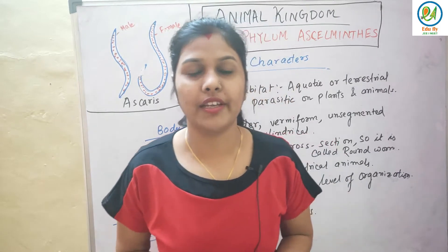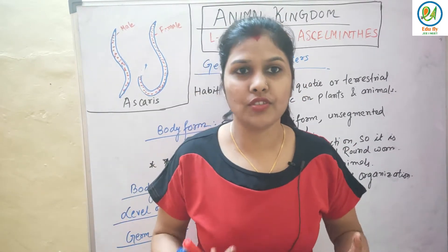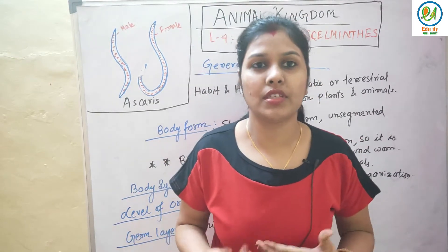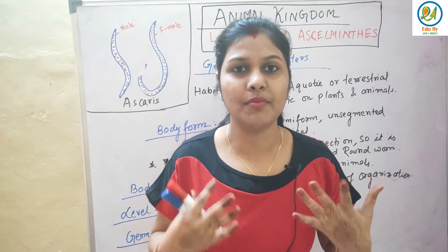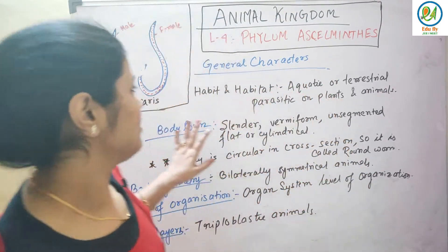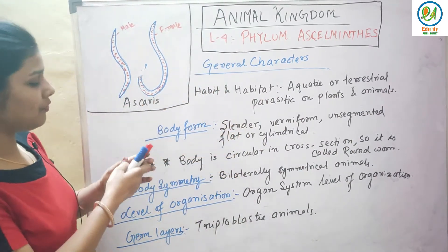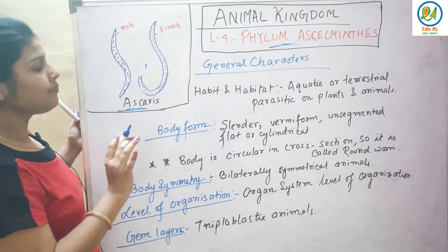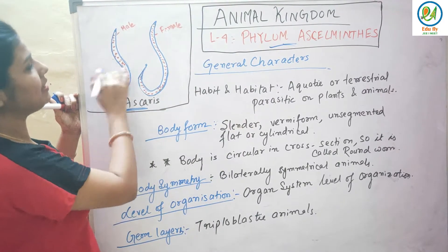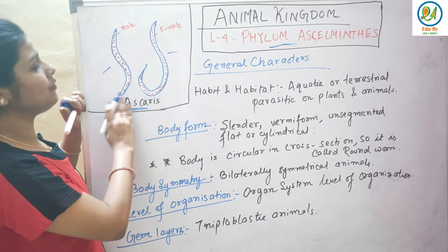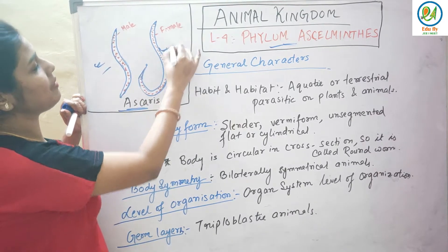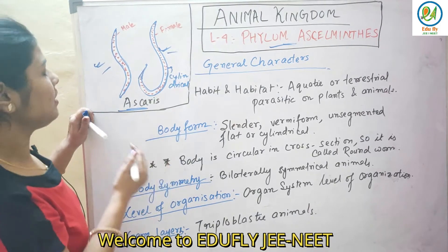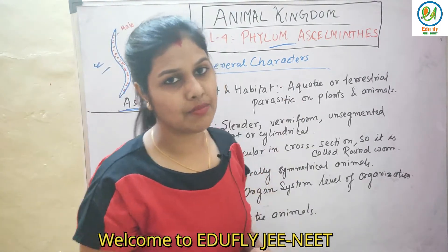Good morning students and welcome to my channel. Today we are going to study a very interesting phylum of the animal kingdom — Aschelminthes, known as roundworms. I have shown you a simple diagram of Ascaris, a very common and familiar example for phylum Aschelminthes. This is the male and this is the female. Their body is cylindrical.